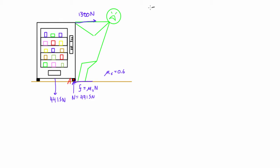We'll say that counterclockwise is the positive sense and we want to find out if the sum of moments is equal to zero. We should also put on some distances: the vending machine is 1 meter wide, so 0.5 meters to center, and it's 1.5 meters tall. He's pulling right at the top.